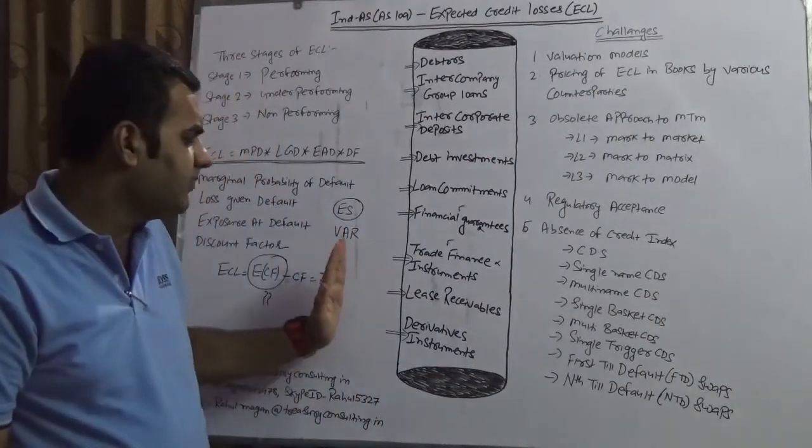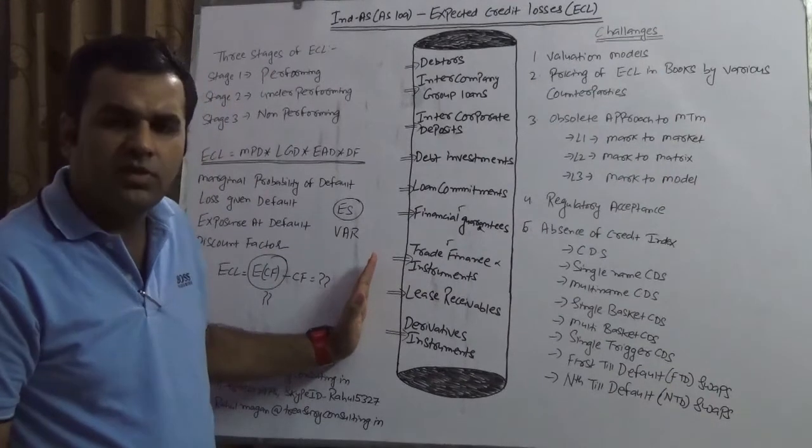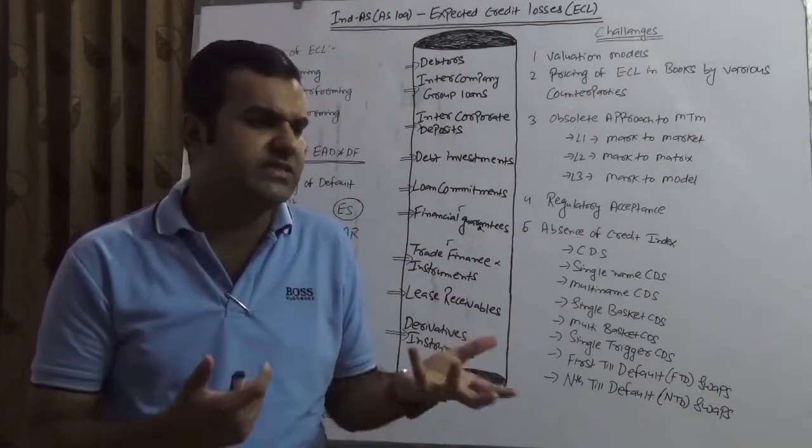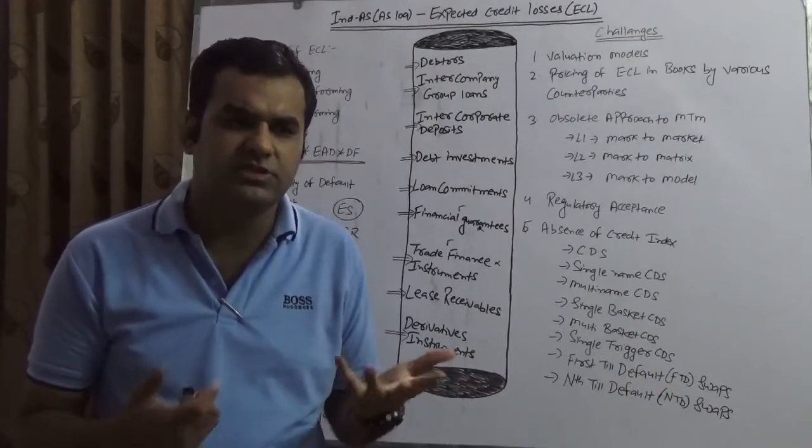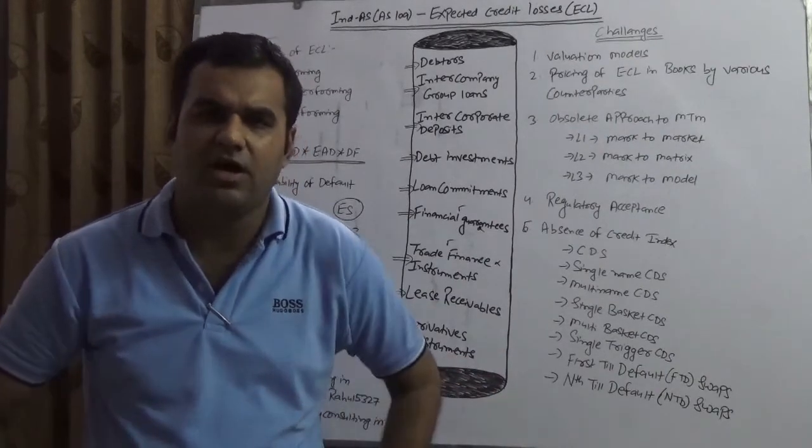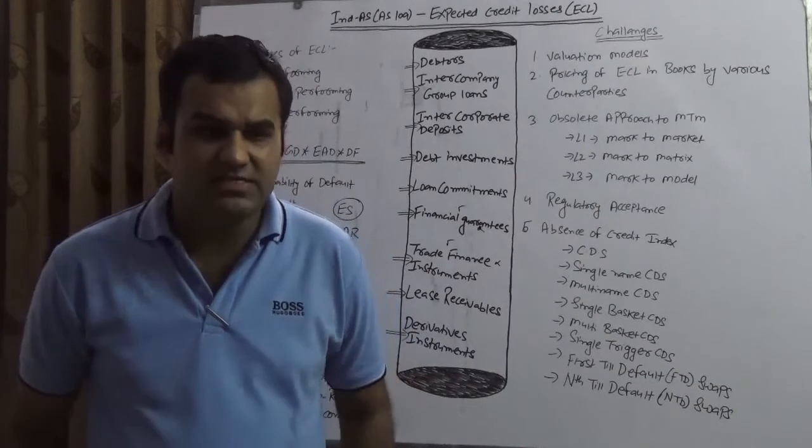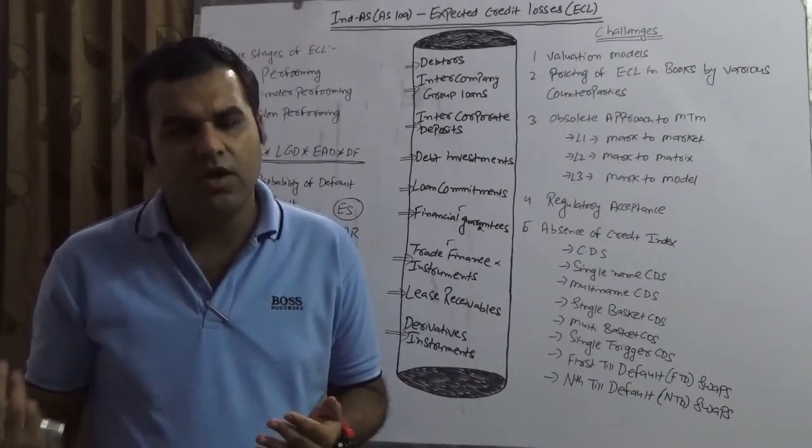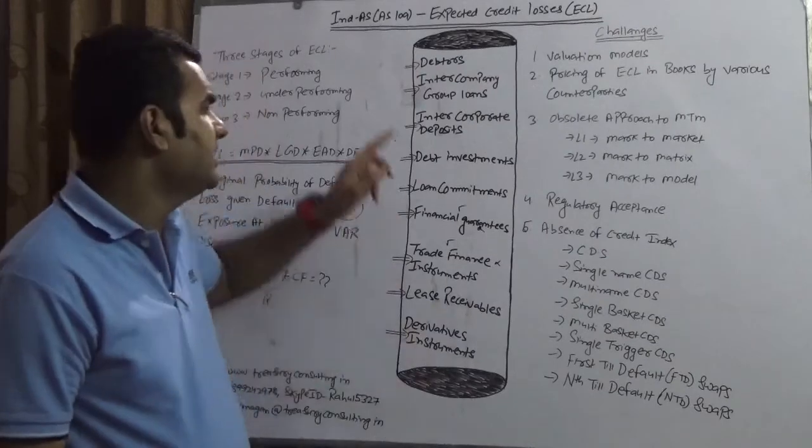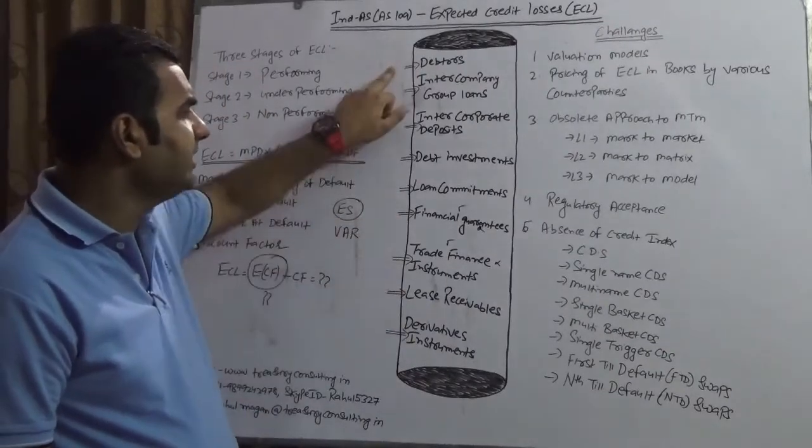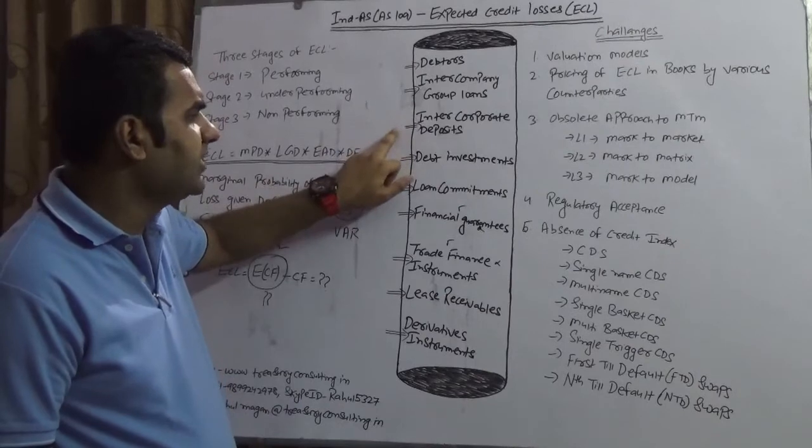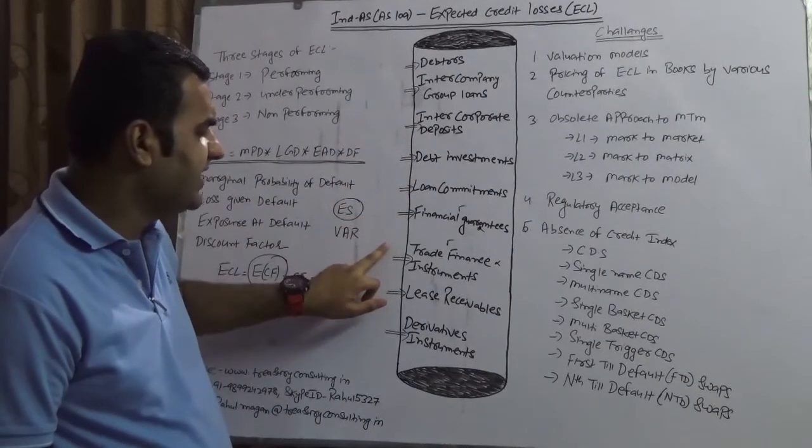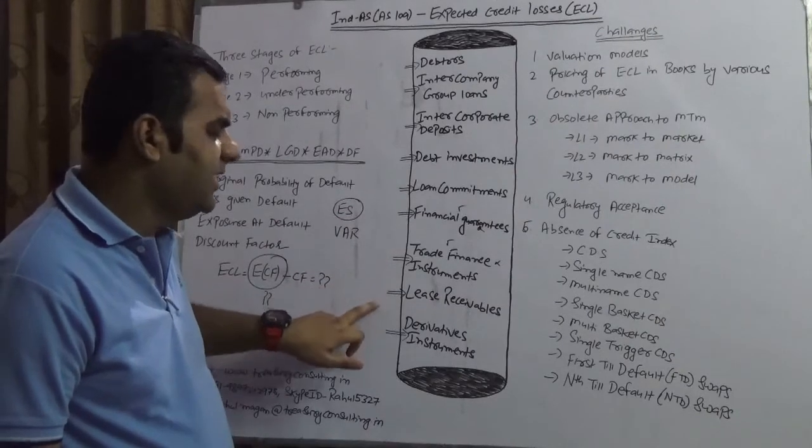Now the point of discussion is there are many banks in this world. Just name it: Goldman Sachs, Credit Suisse, UBS, HSBC, Deutsche, Barclays, Bank of America, Citibank, HDFC, ICICI, Axis Bank, the list is endless. In all these banks, majority of things are there: debtors, intercompany group loans, intercompany deposits, debt investment, loan commitments, financial guarantees, trade finance instruments, lease receivable, and derivative instruments.